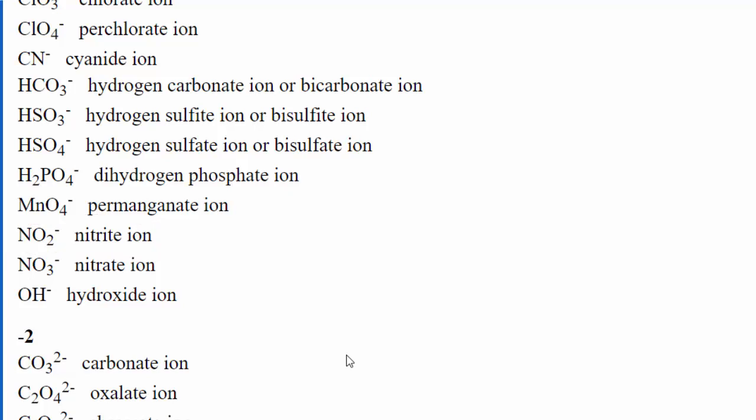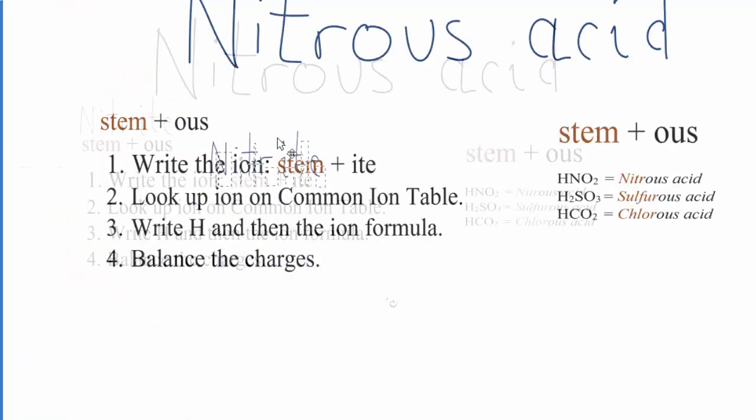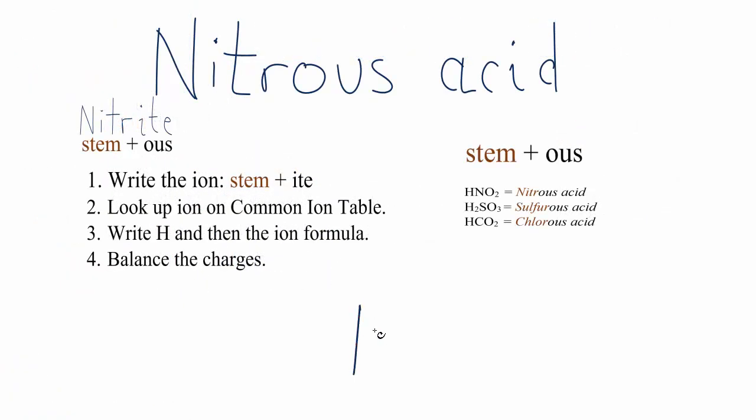So NO2 minus, we're going to go back to our table and we'll write NO2 and it does have a minus charge. Then because it's an acid it'll have H in front and that makes this the formula for nitrous acid HNO2.